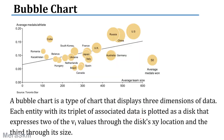A bubble chart is interesting because it presents three dimensions of data. Each entity with its triplet of associated data is plotted as a disk. For example, you could have average team size and average medals per athlete on the axes, with the size of the bubble representing a third variable — such as total medals. This makes the bubble chart a rich multi-dimensional visualization tool.